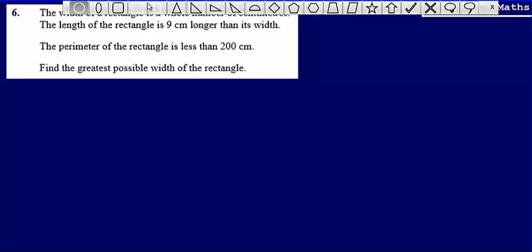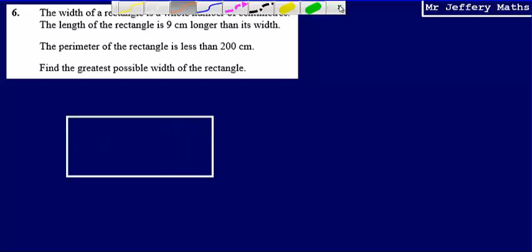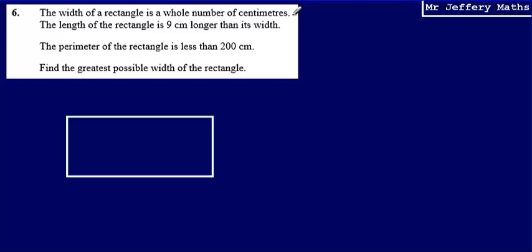In order to think about this, I'm going to draw a quick sketch of a rectangle. The width is a whole number but I'm not given any information about what it is, so the width is an unknown number. Because it is an unknown number, I can call this width x. So I'm going to label my width on my rectangle as x.